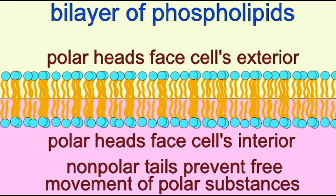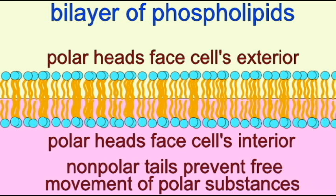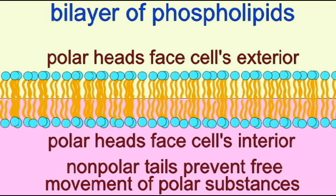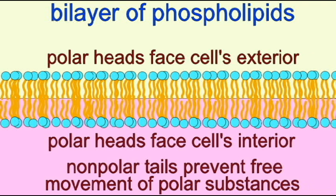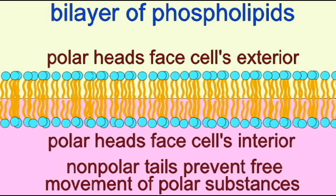As a result, the cell membrane can be selectively permeable. Things cannot pass freely back and forth across the cell membrane without the regulation of protein channels and transporters.